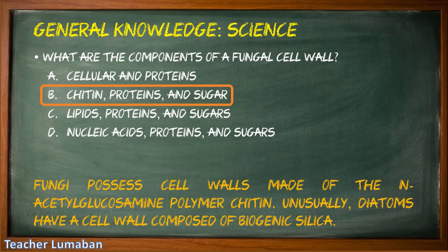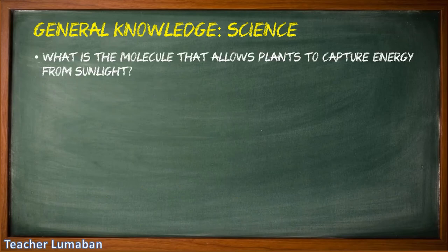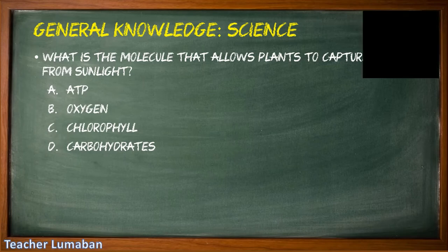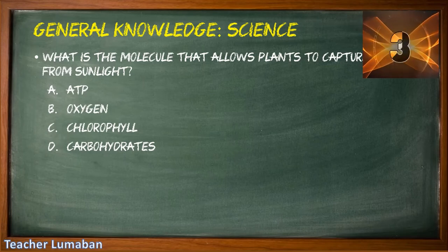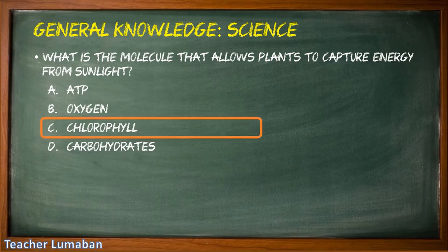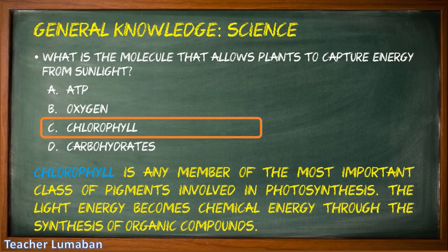What is the molecule that allows plants to capture energy from sunlight? Letter A: ATP, Letter B: oxygen, Letter C: chlorophyll, Letter D: carbohydrates. The correct answer is Letter C: chlorophyll. Chlorophyll is any member of the most important class of pigments involved in photosynthesis, where light energy becomes chemical energy through the synthesis of organic compounds.